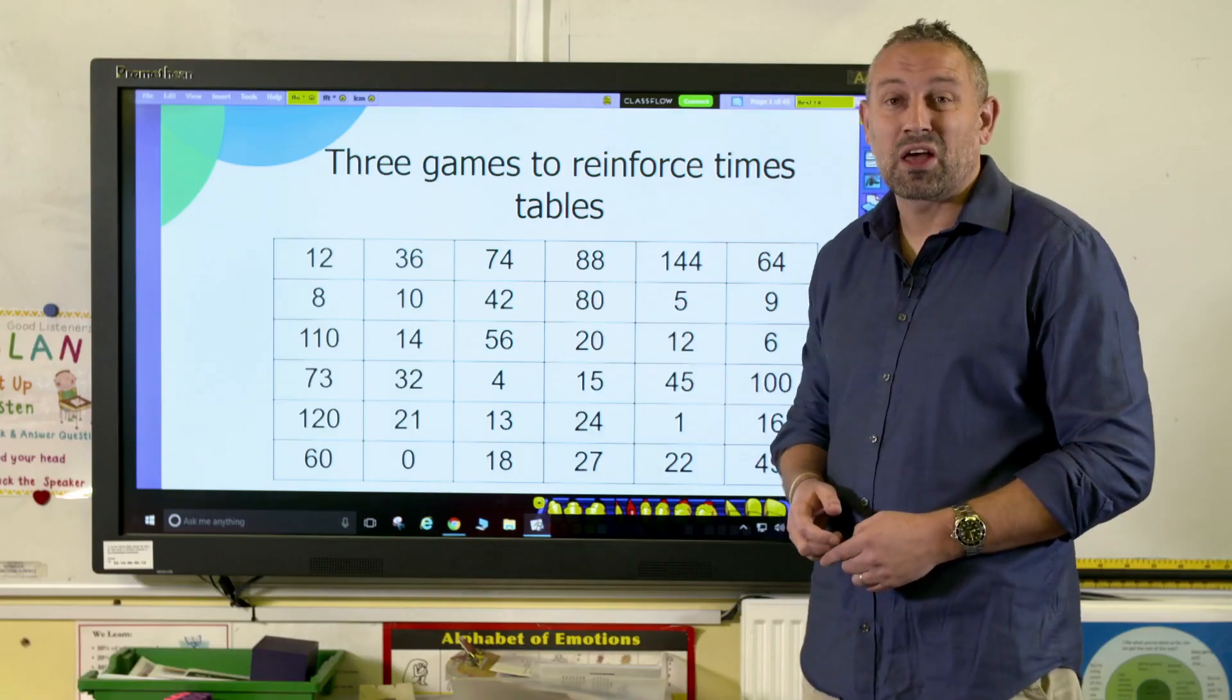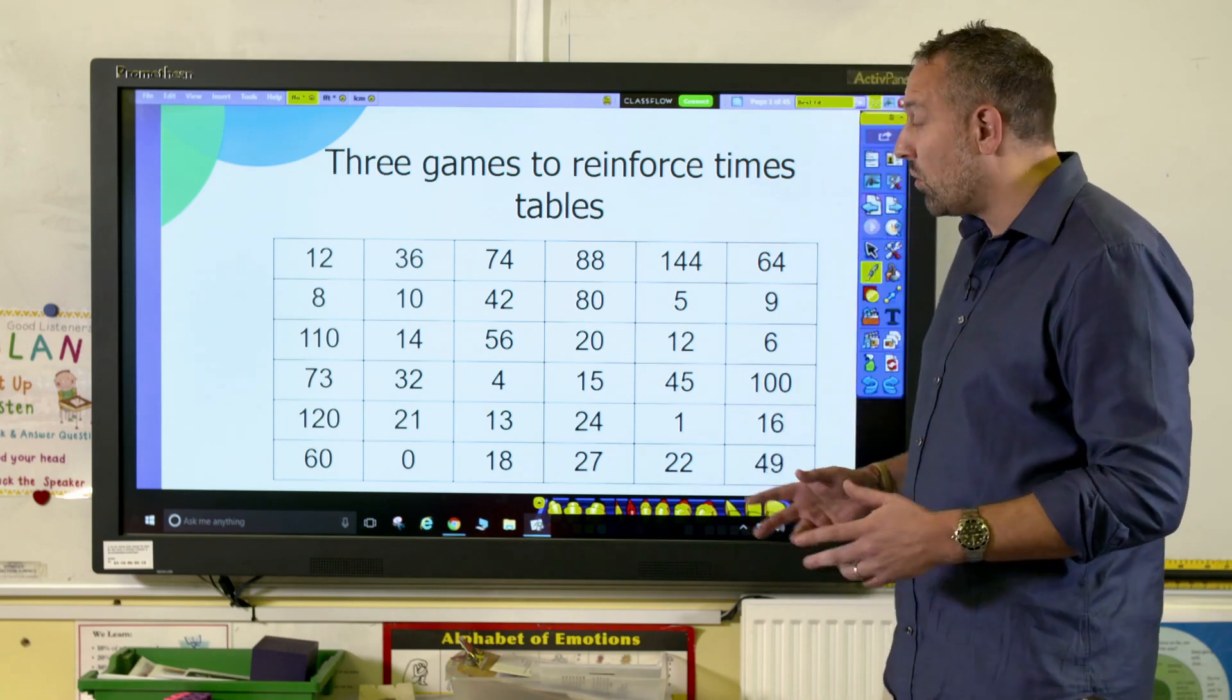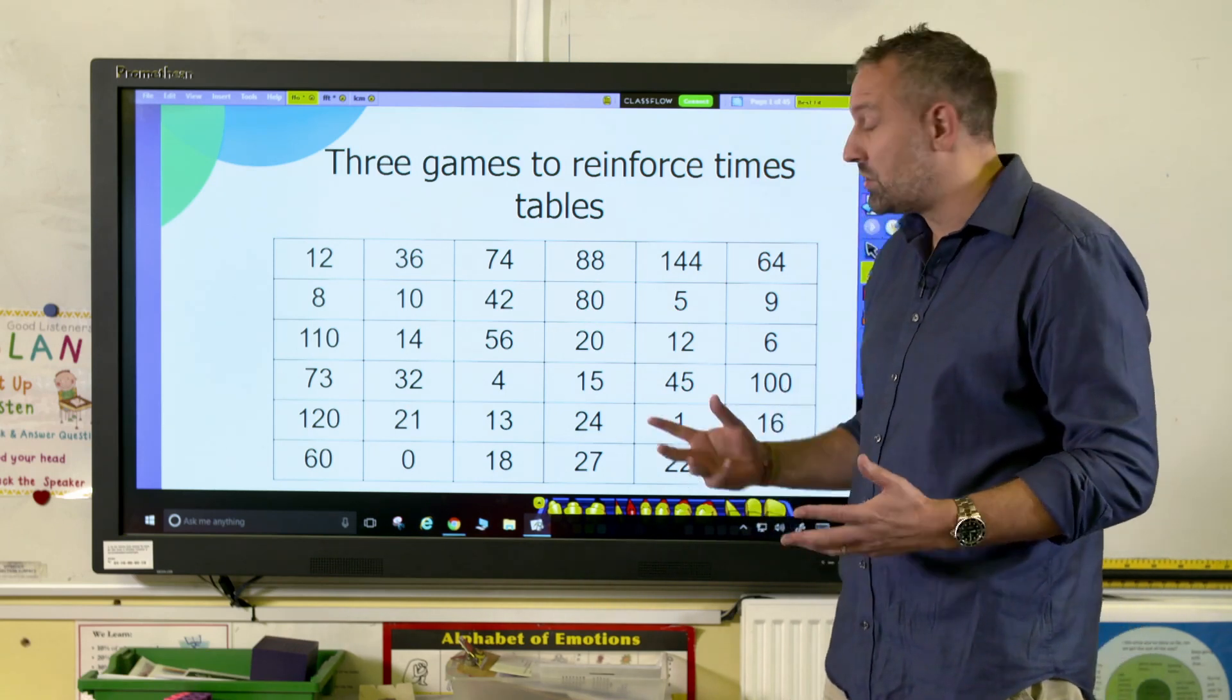You can write them down, you can chant them, you can say them in partners, or you can play a few of these games. This one's a bit like Connect Four, so one child, and they can play it in partners, will choose a number, for example 56.